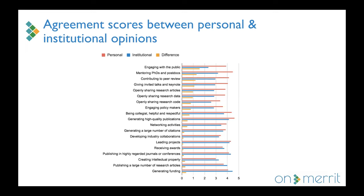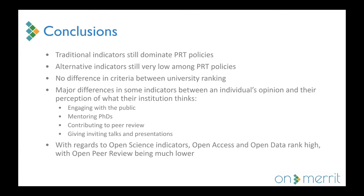We also looked at personal activities, and we see that generating high-quality publications, mentoring PhDs and postdocs, and being collegial, helpful, and respectful are the top three most popular responses. We can see that the most traditional indicators are still the most popular. We can see that researchers are still trying to value open science and RRI components, but this has not yet propagated into practice to the extent that we should expect. Our recommendation is therefore to continue raising awareness and credibility with regards to open science and RRI approaches. Thank you very much.